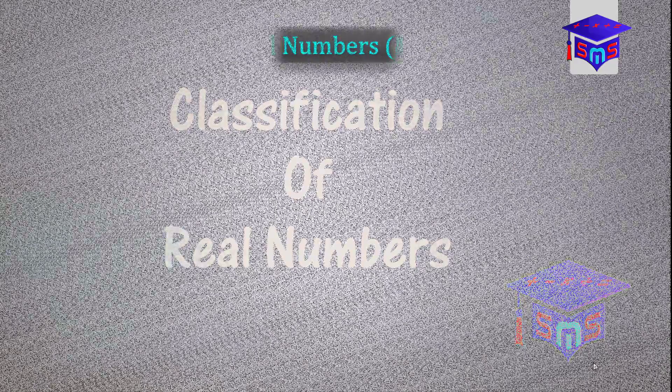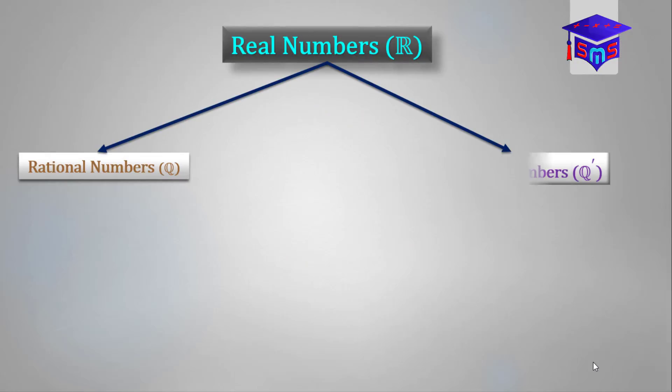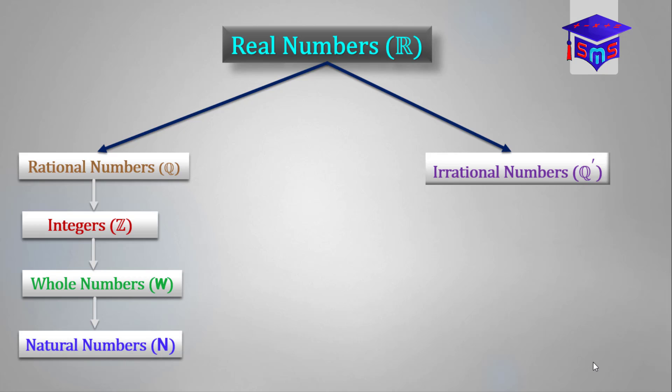Why will we talk about real numbers? It consists of rational and irrational numbers. And then under the rational numbers, we have integers, whole numbers, and natural numbers.